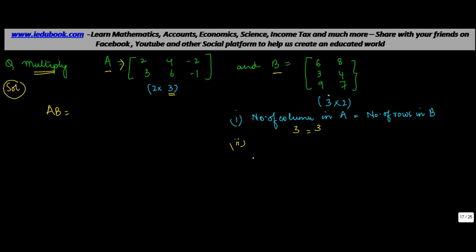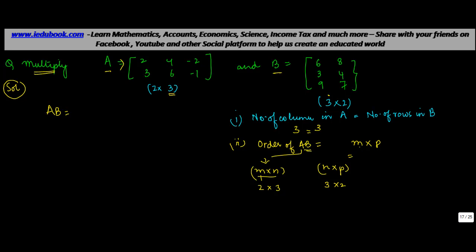Now, what is going to be the order of the resulting matrix? Let's call it AB. If the order of matrix A is M×N and that of B is N×P, then the order of AB is M×P. Comparing: A is 2×3 and B is 3×2, so the order of AB will be 2×2, meaning the matrix AB is going to have four elements.